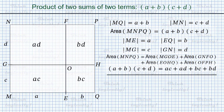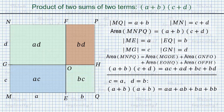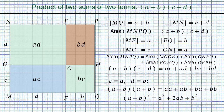In particular, when c equals a and d equals b, rectangles MGOE and EOHQ turn into squares with sides a and b respectively, while the remaining rectangles GNFO and OFHQ become equal to each other, with one side equal to a and another side equal to b. Therefore both rectangles have area a times b. At the same time, the whole rectangle MNPQ turns into a square with side a plus b, giving the well-known formula for the square of a plus b.